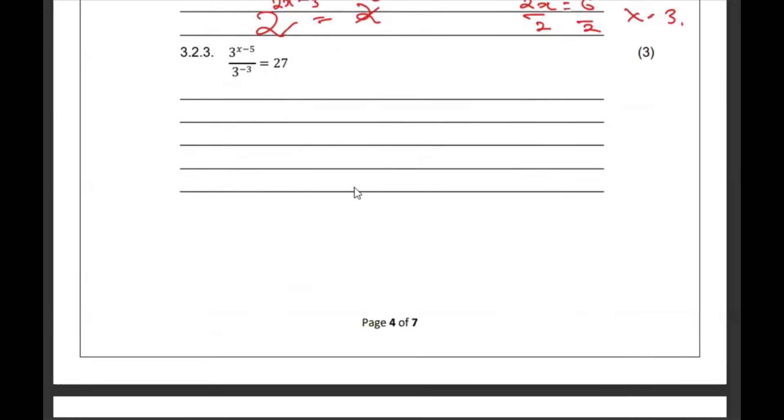Then 3.2.3. Let's change the bases to be 3. And then we're going to have to subtract. So, 3x minus 5 minus minus 3 is equal to 3 to the exponent of 3. That's going to be x minus 2 is equal to 3. Let's move the 2 to that side. So, 3 plus 2 becomes 5.